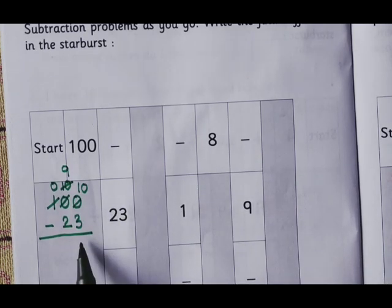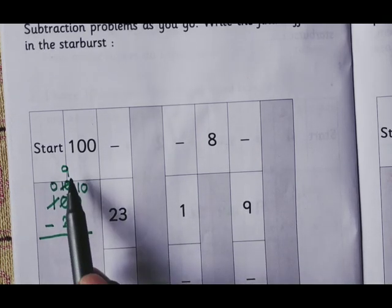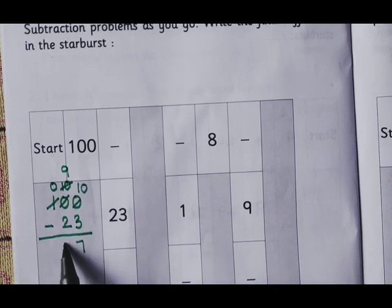10 minus 3 is 7. 9 minus 2 is 7. So we got here 77.